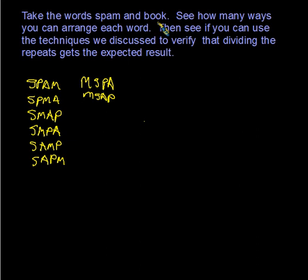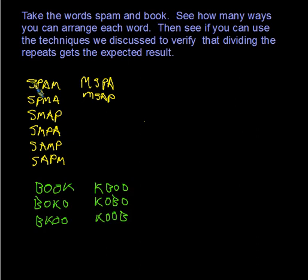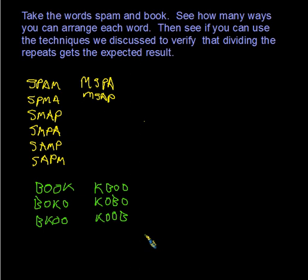Now let's try BOOK. I've begun to write out the possibilities. Since there are two indistinguishable O's, I didn't write six different arrangements of the last three letters — I just wrote three possible arrangements with B out in front. Then I put K in front and wrote three possible arrangements of B, O, and O. Finish writing the rest of the columns for all possible ways to write BOOK, then apply the divide-by-the-repeat technique to verify the result.